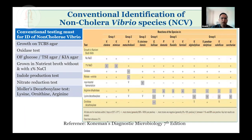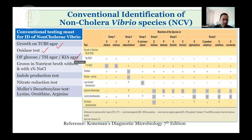When it comes to non-cholera Vibrio species, biochemical tests and culture media are preferred. Growth on TCBS agar: many non-cholera Vibrios are sucrose non-fermenters, so growth can be green and has to be carefully identified. Oxidase tests — all are positive except one species. OF glucose, TSI agar, or KI agar need to be done. Growth on nutrient broth with and without sodium chloride 1%, indole production, nitrate reduction test, and lysine decarboxylation test are useful in identifying individual species.